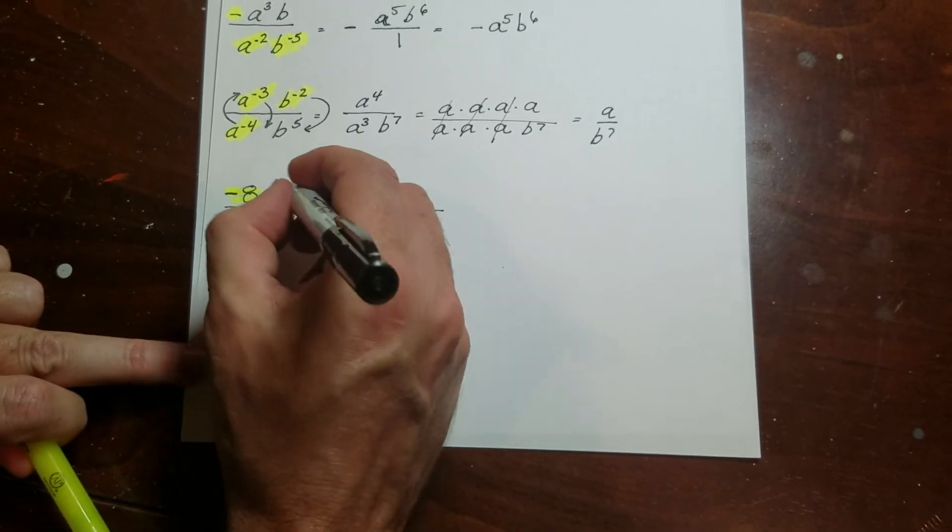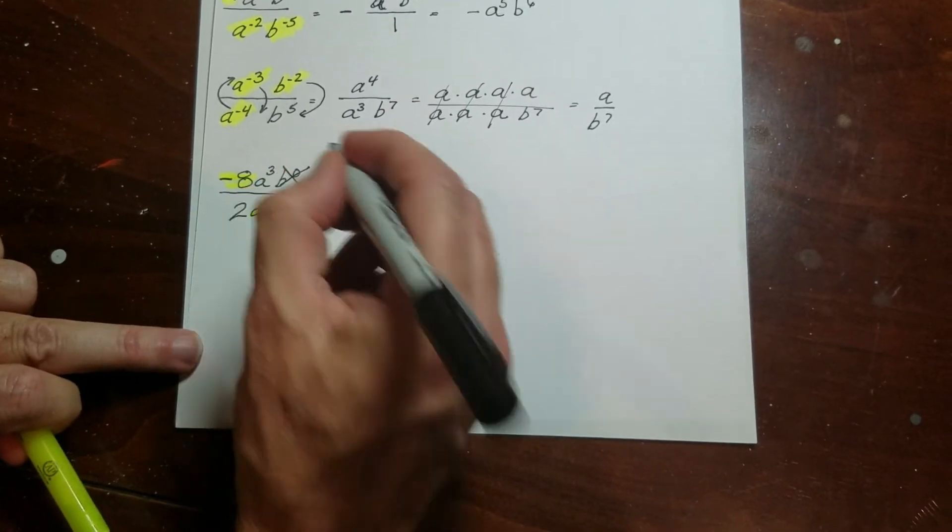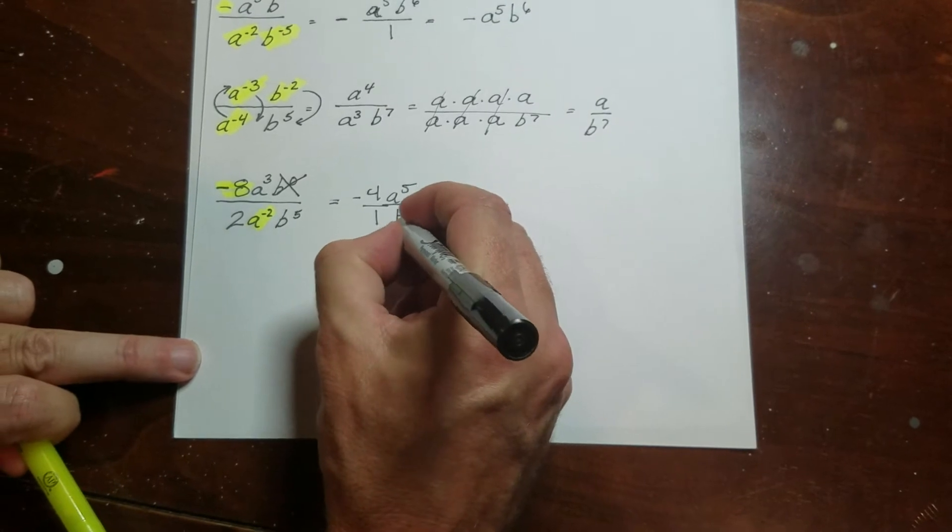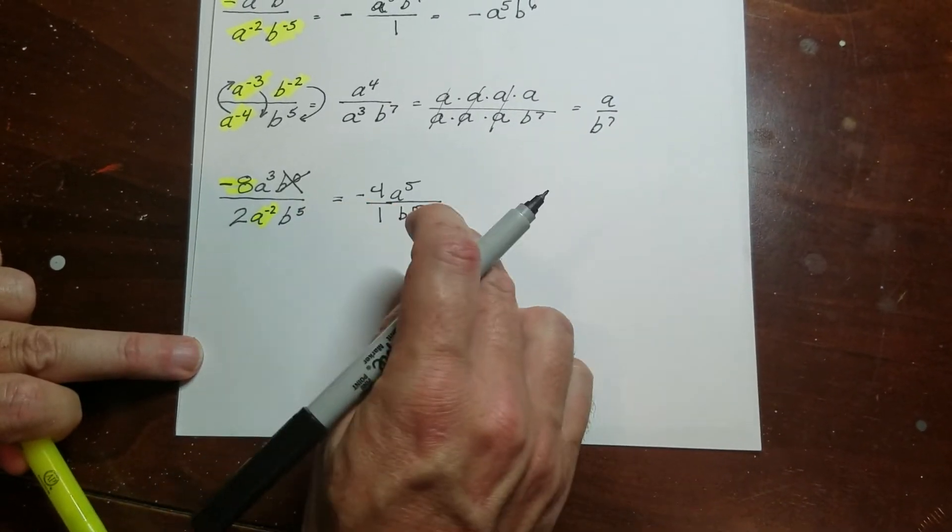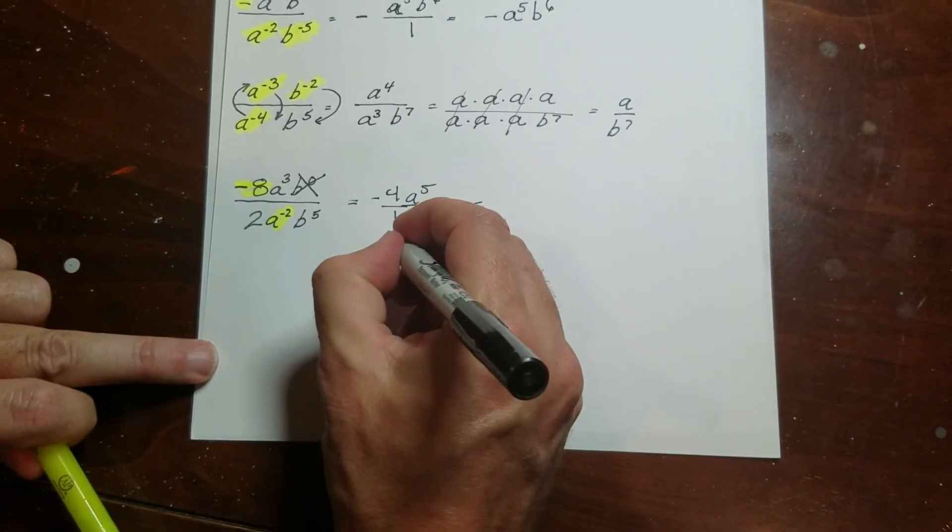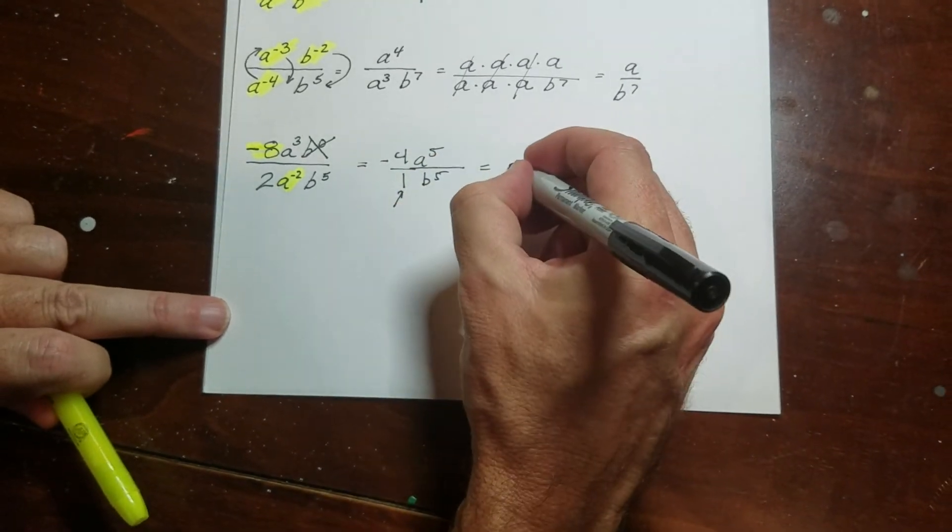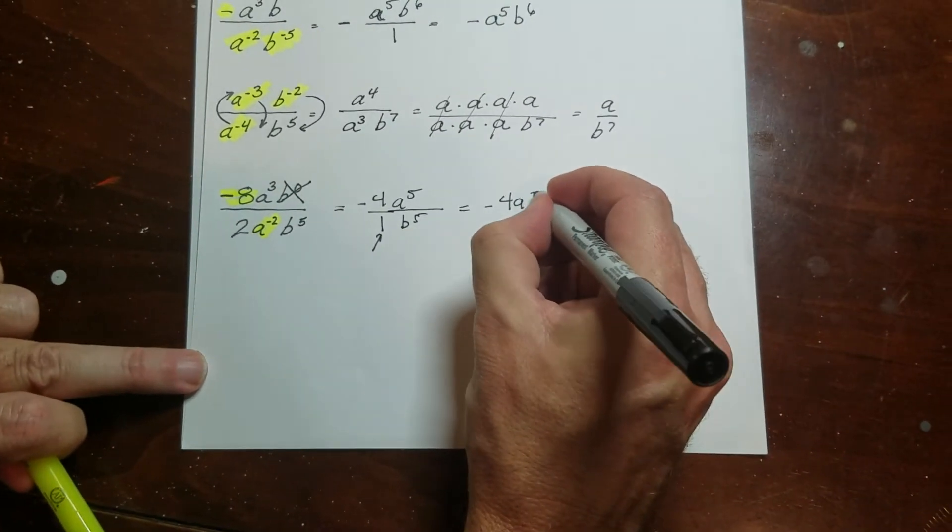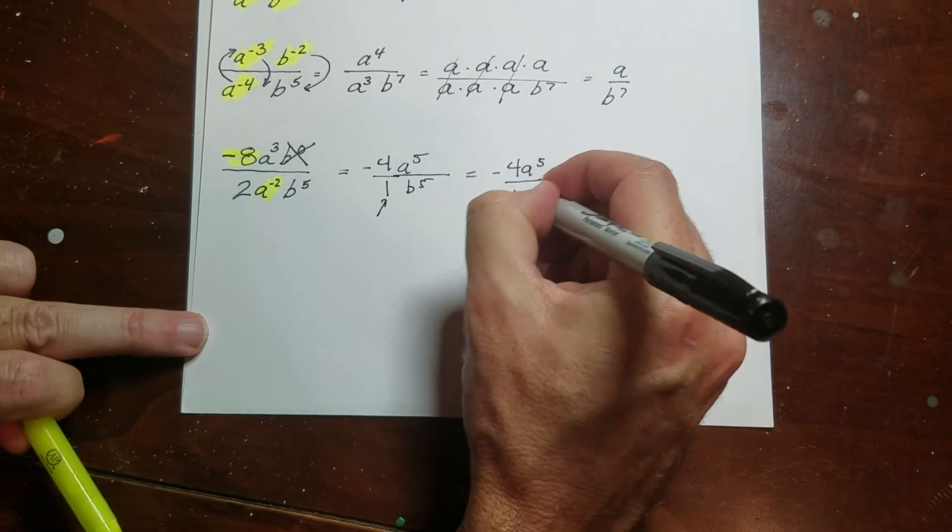If you ever see something like this, you can go ahead and just cross it out. It doesn't do anything at all. And then I have b to the 5th down here. Now, I could actually leave the answer like this, but I'm going to neaten it up a bit because you really don't need this 1 right here. So this is negative 4a to the 5th over b to the 5th.